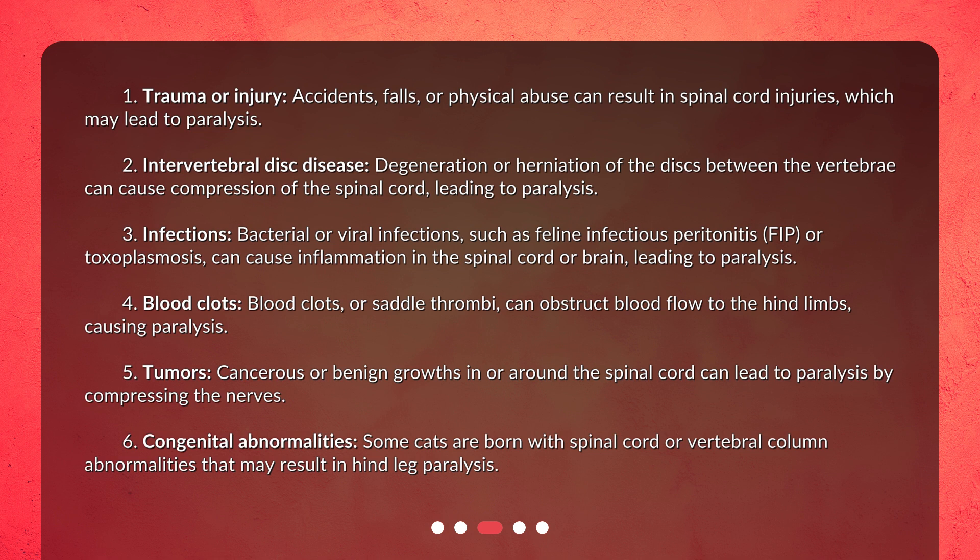5. Tumors — cancerous or benign growths in or around the spinal cord can lead to paralysis by compressing the nerves. 6. Congenital abnormalities — some cats are born with spinal cord or vertebral column abnormalities that may result in hind leg paralysis.